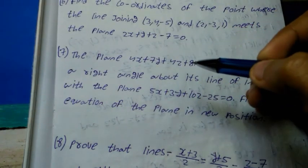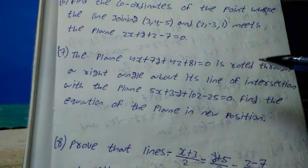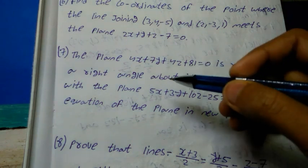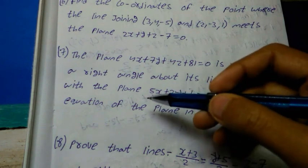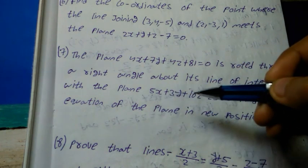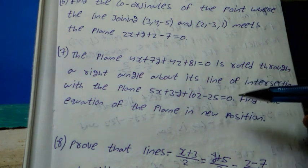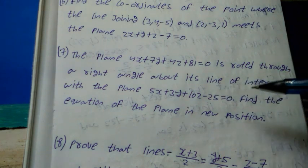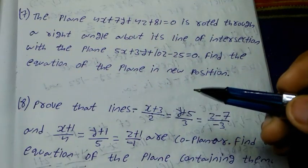Number 7 question: the plane 4x plus 7y plus 4z plus 81 equal to 0 is rotated through a right angle about its line of intersection with the plane 5x plus 3y plus 10z minus 25 equal to 0. Find the equation of the plane in its new position.